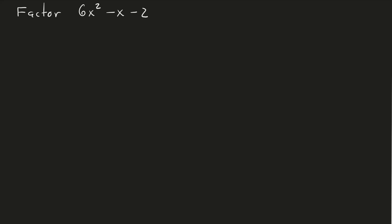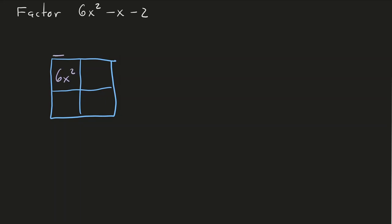Next we factor 6x squared minus x minus 2. Using the factor square, the first box must be 6x squared, so the coefficients along the top and side are factors of 6: 1, 2, 3, or 6, such that they multiply to give 6x squared. The last box is minus 2, so the remaining entries multiply to minus 2. I call the method for finding these the AC method.